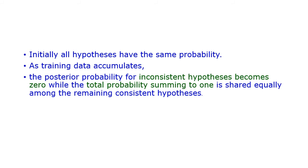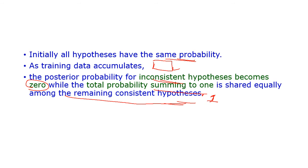Initially all hypotheses have the same probability. As training data accumulates, the posterior probability of any inconsistent hypothesis becomes 0, and the total probability sums to 1, shared equally among the remaining consistent hypotheses. This is analogous to rolling a die with 6 sides — each number has probability 1/6, and the sum of all six 1/6 values equals 1.